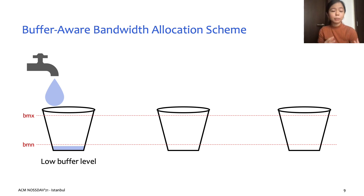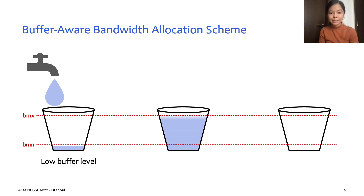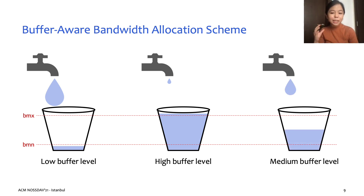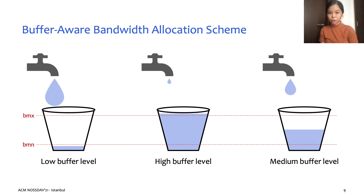Since those clients are getting more bandwidth, we will have to reduce the bandwidth allocated to some other clients so that we don't overload our downstream link. In this case, we reduce the bandwidth allocated to clients with a high buffer level above our max buffer threshold, since they are better able to tolerate network dips. For all other clients with a medium buffer level between the max and min threshold, their allocated bandwidth will vary according to their buffer level — the less buffer you have, the more bandwidth you will receive.